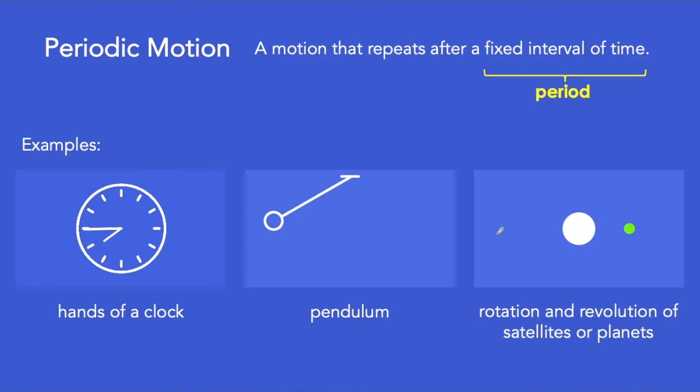Let's begin with periodic motion. Examples of periodic motion include the movement of the hands of a clock, the swinging of a pendulum, and the rotation or revolution of satellites and planets.